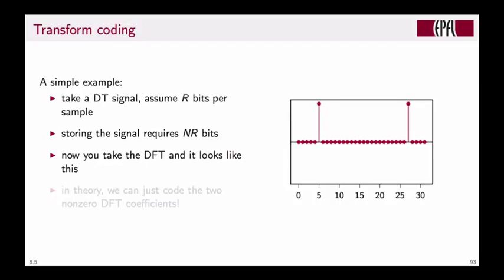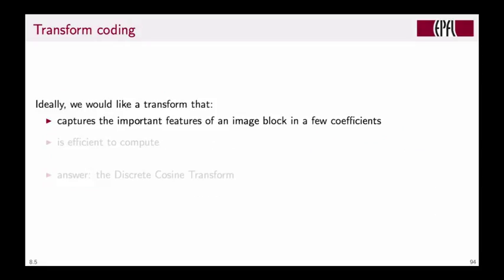The signal was a sinusoid corresponding to one basis vector for the signal length. With this representation, instead of nr bits, we just need to code two DFT coefficients, possibly with their position. The lesson: we want a transform that captures important block features in just a few coefficients, so we can encode those and discard the rest. Also, the transform should be efficient to compute.